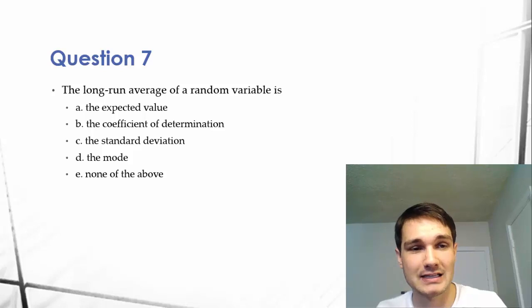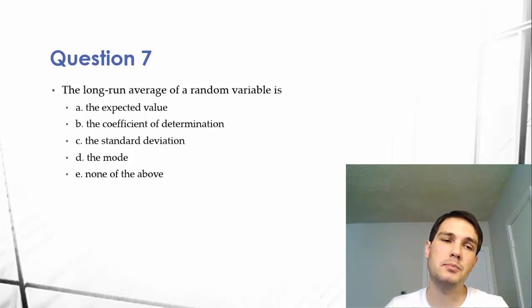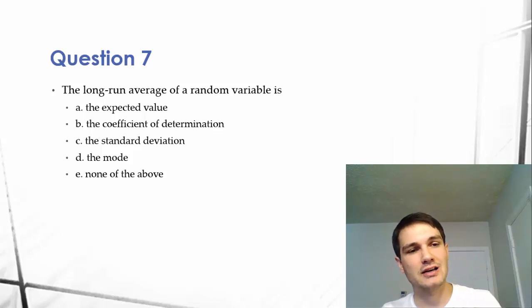The long run average of a random variable is A, the expected value, B, the coefficient of determination, C, the standard deviation, D, the mode, or E, none of the above.